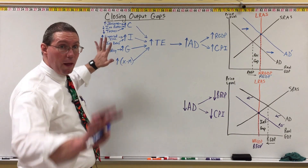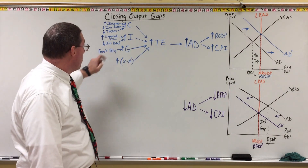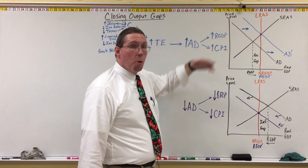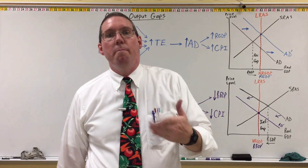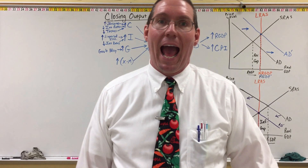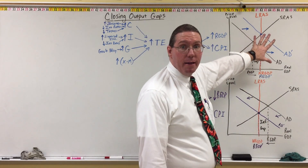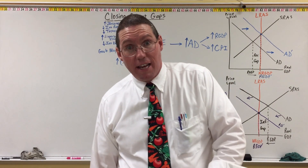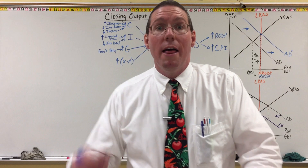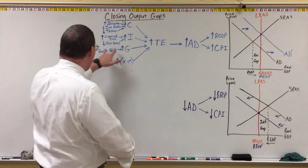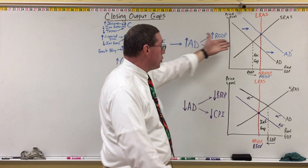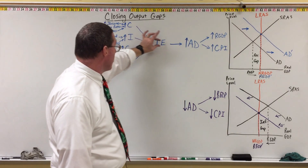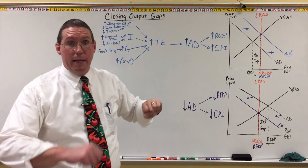This link along government spending is very important because it is one of the most direct links the government has to affecting the economy. If the government feels we're in a recessionary gap and spending is too low, they can simply decide to spend more money to affect total expenditure and aggregate demand. This is a major mechanism of Congress in affecting the economy, and we'll talk about that in Unit 3.